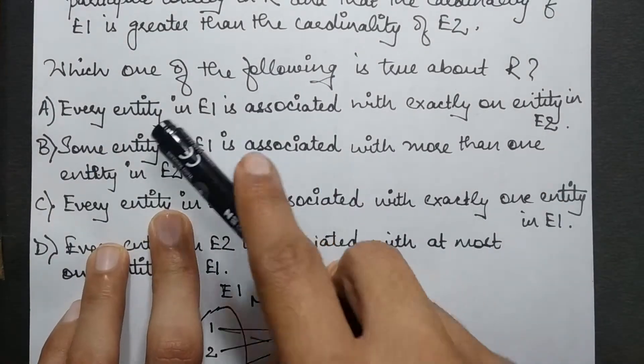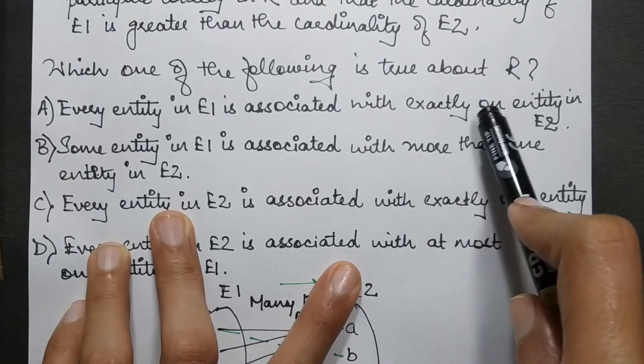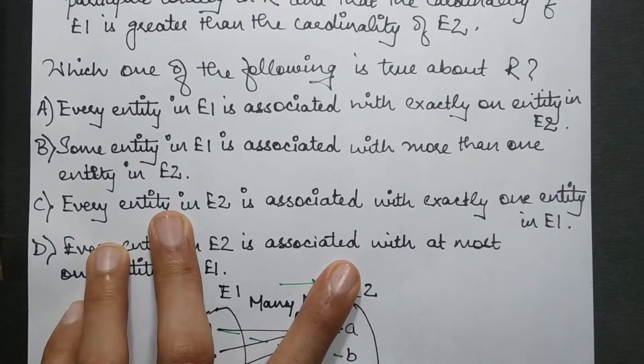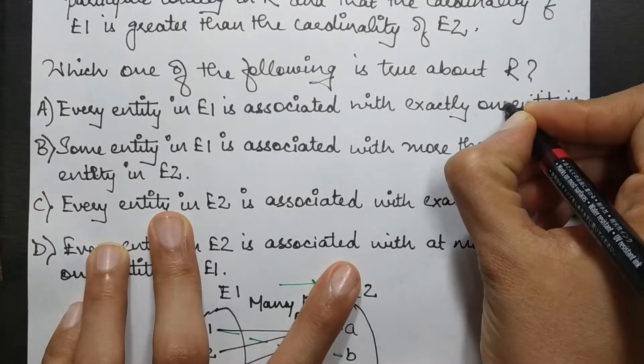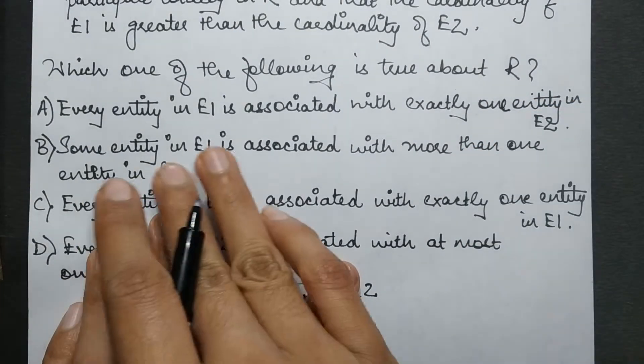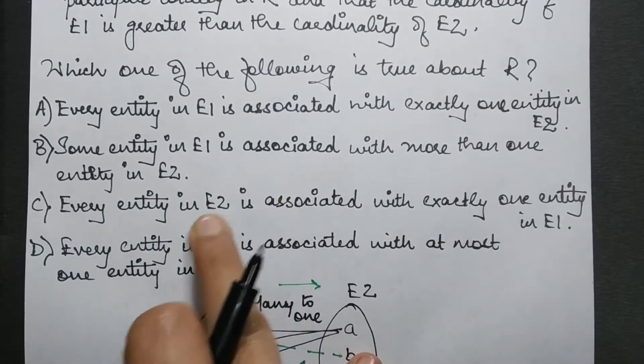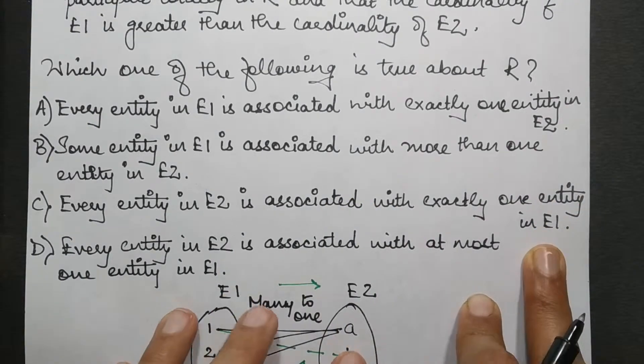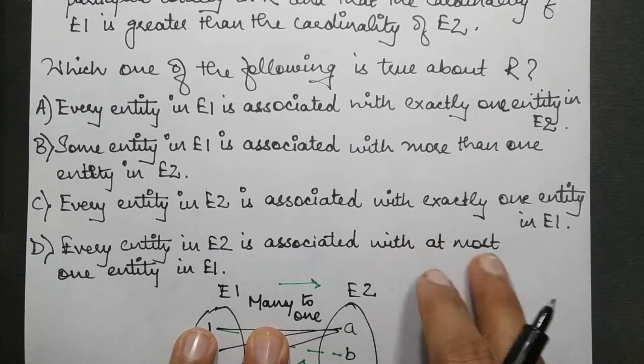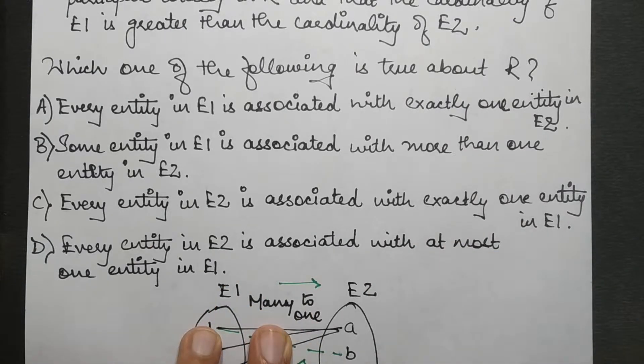The first one says every entity in E1 is associated with exactly one entity in E2. Every entity in E1 is associated with more than one entity in E2. Every entity in E2 is associated with exactly one entity in E1. Every entity in E2 is associated with at most one entity in E1. So now we need to consider this.